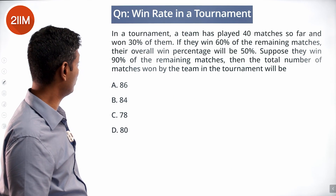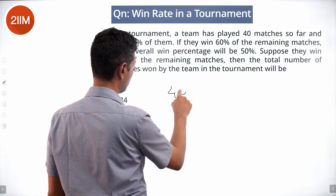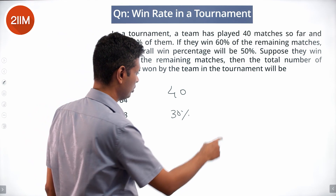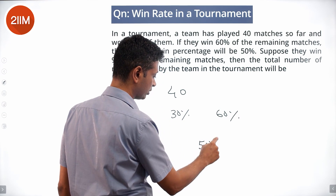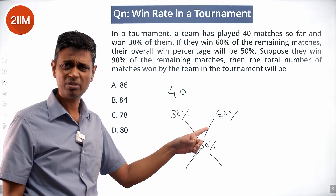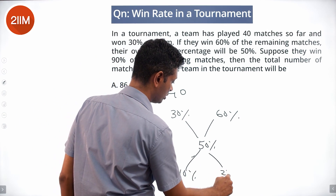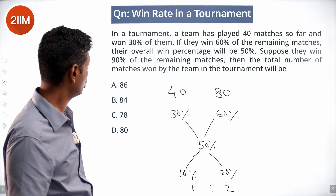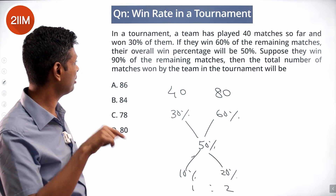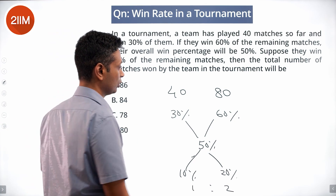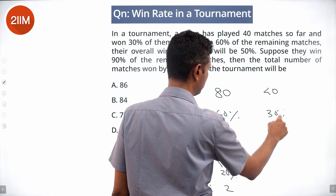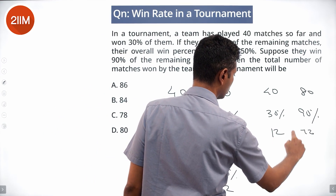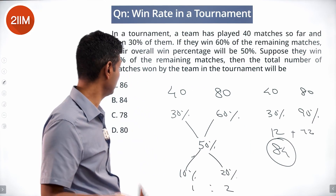In a tournament, a team has played 40 matches and won 30%. They win 60% of remaining matches for an overall 50%. Mixing 30% and 60% to get 50%: ratio = 1:2, so remaining = 80 matches, total = 120. If they win 90% of remaining 80 matches: wins = 12 + 72 = 84, overall win% = 84/120 = 70%.